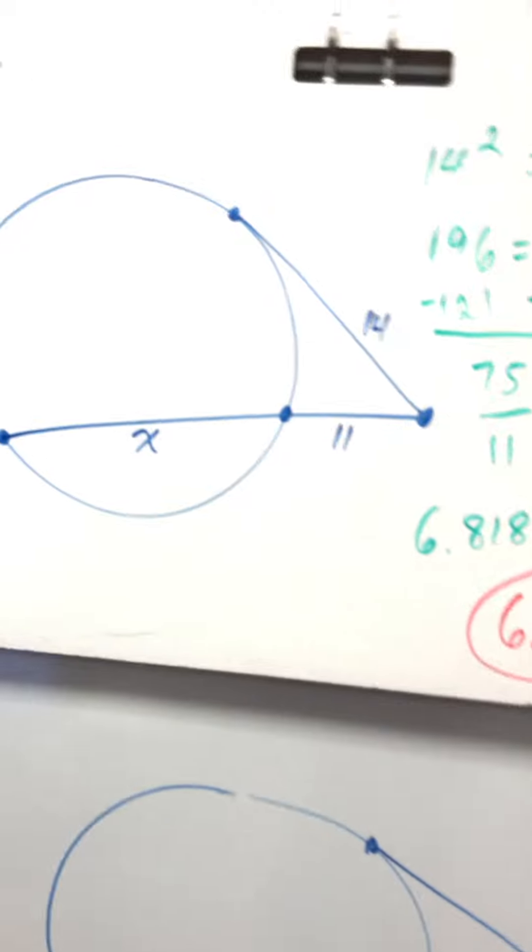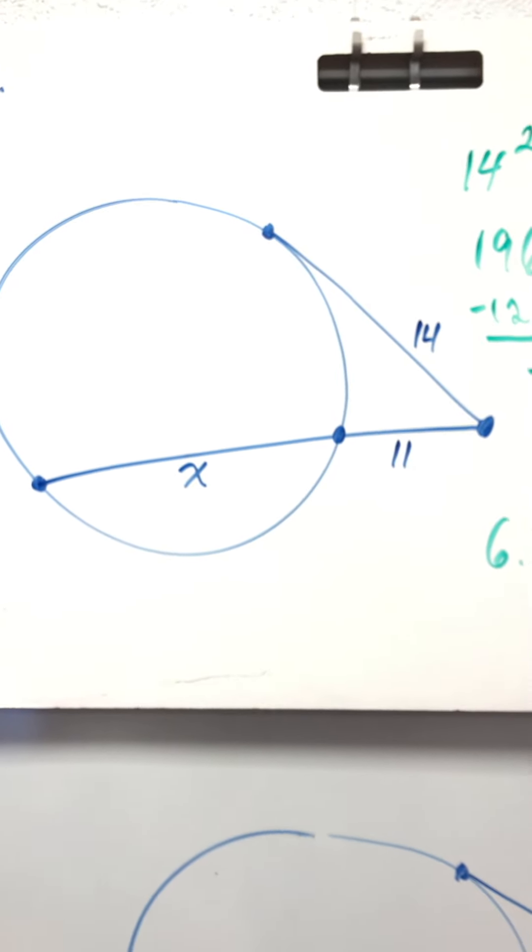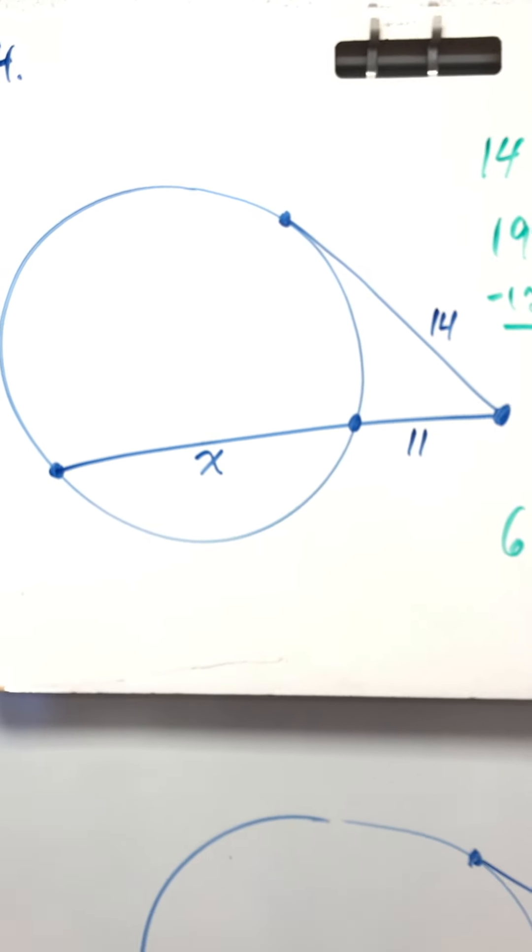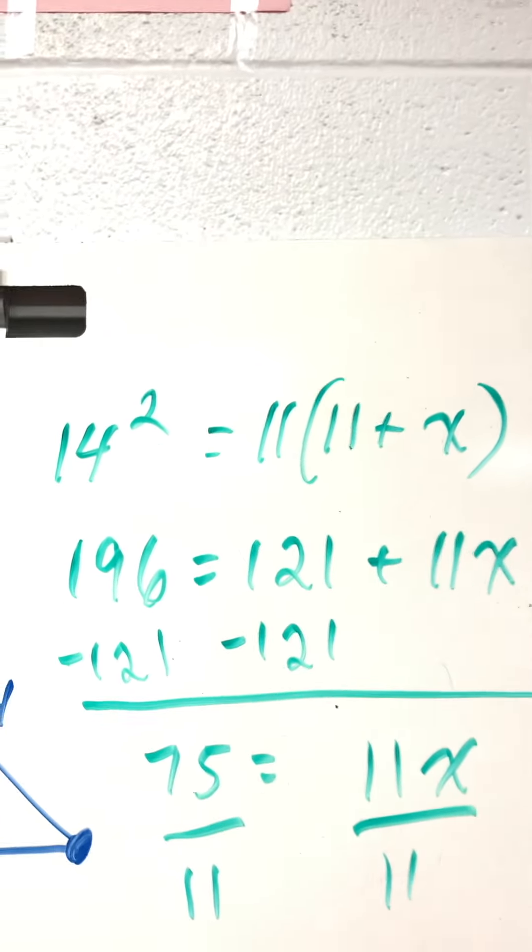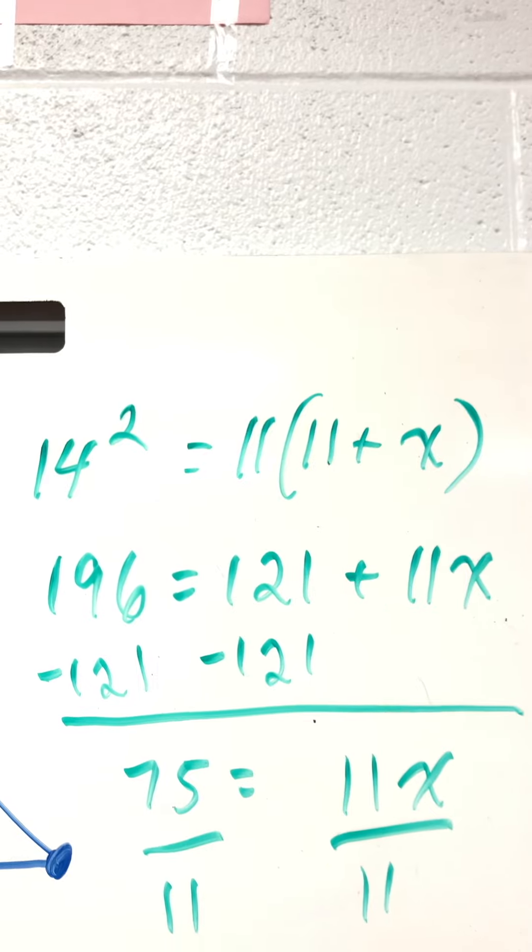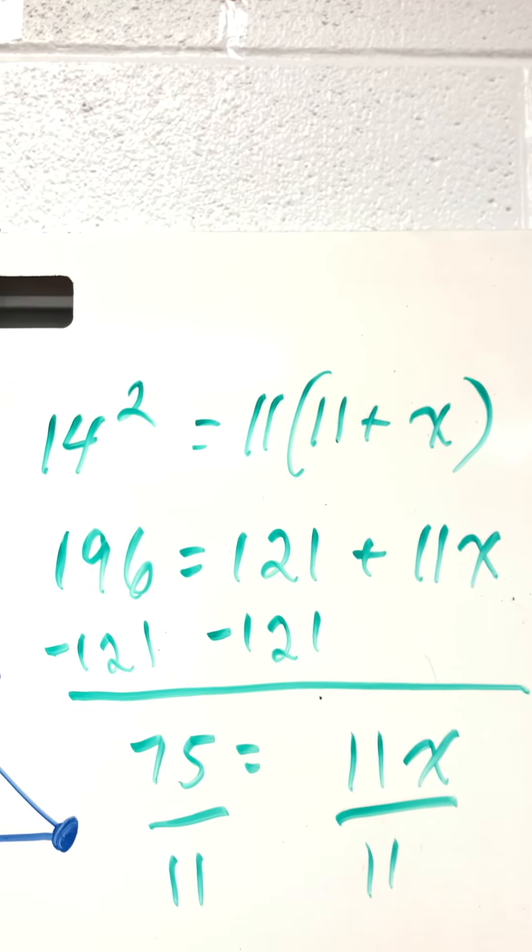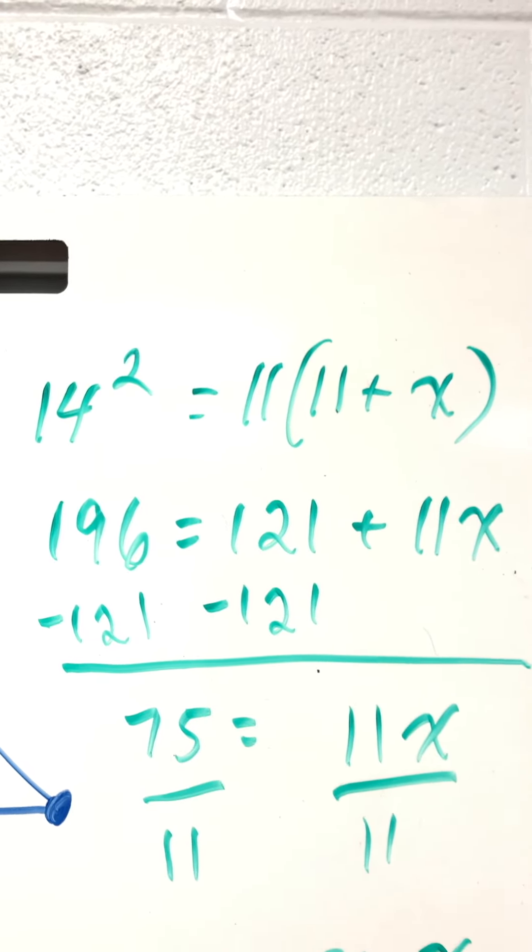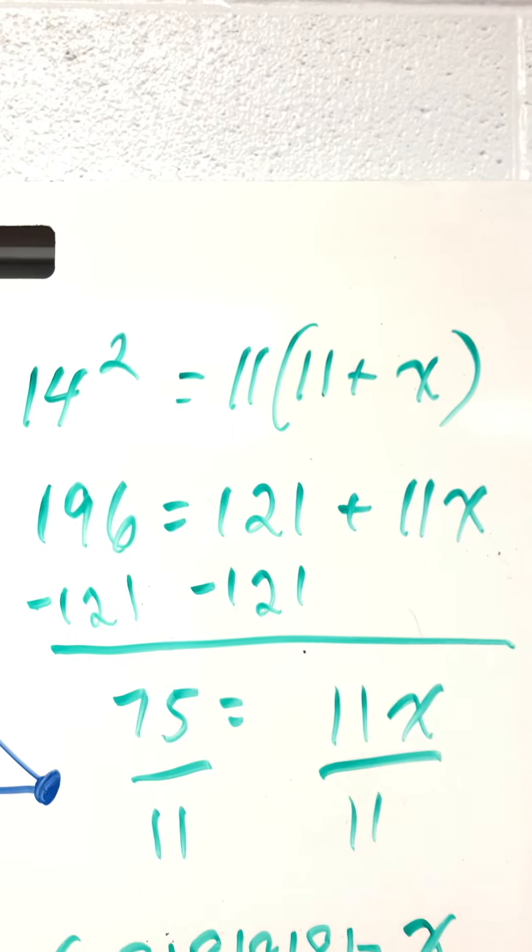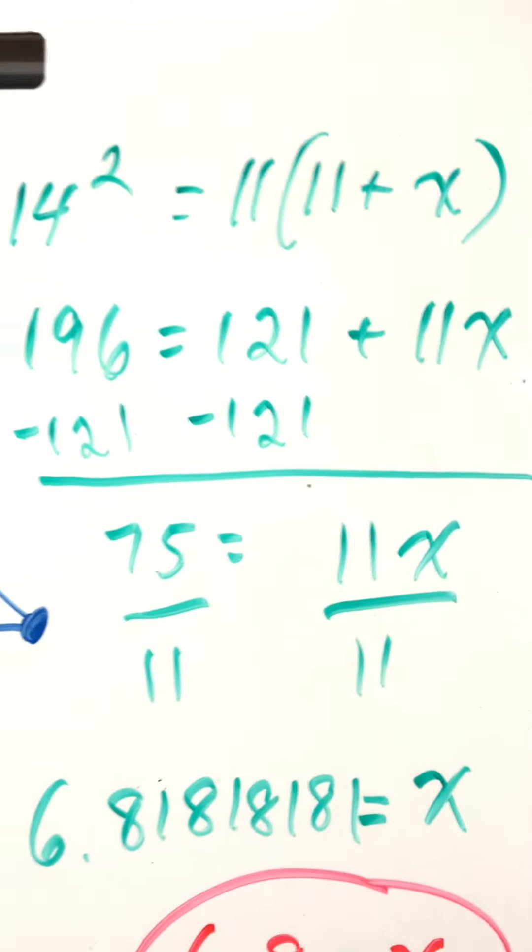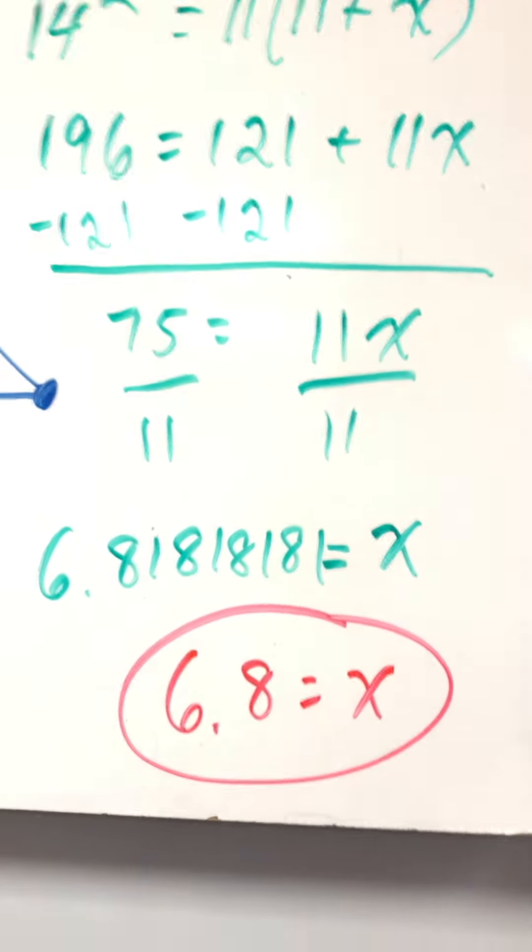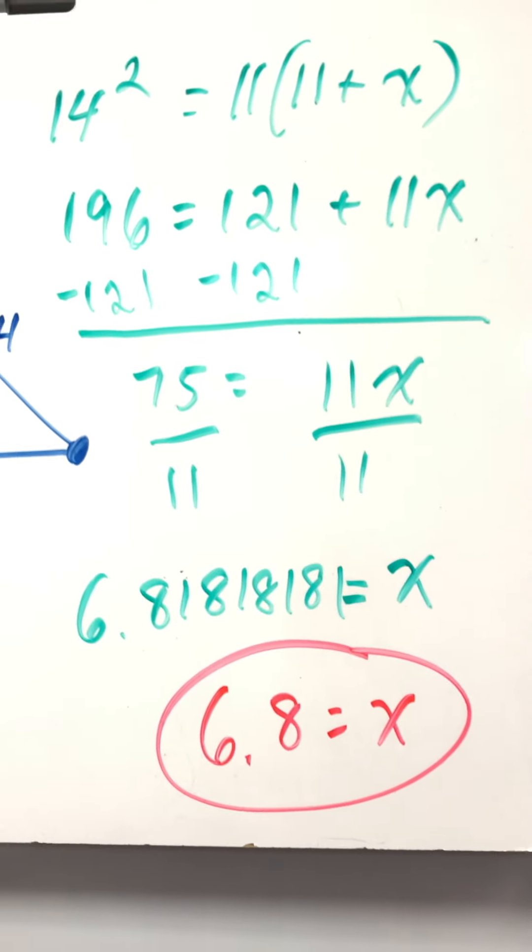So here, 14 squared equals 11 times 11 plus X. Distribute the 11. You get 121 plus 11X. Minus 121 from both sides. You get 75 equals 11X. Divide by 11. You get 6.81 repeating. Round to 6.8.